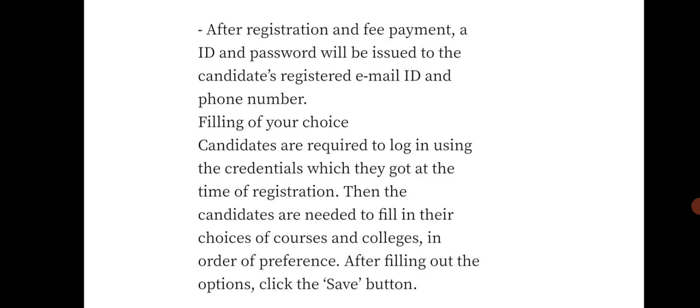After registration, candidates are required to log in using the credentials — user ID and password — received at registration. Candidates then need to fill in their choices of course and colleges in order of preference; this is called web counselling. You select the colleges you are applying for under the all India quota. After filling out the options, click the save button so the options are saved. After that, wait for the seat allotment result.